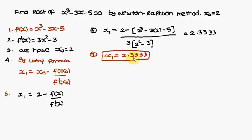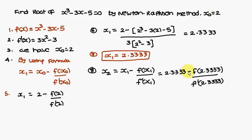This gives x₁ as 2.3333. Similarly, for x₂, the formula is x₁ minus f(x₁) divided by f'(x₁). Since x₁ is 2.3333, we calculate 2.3333 minus f(2.3333) divided by f'(2.3333).